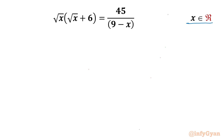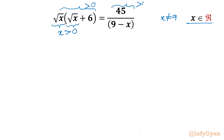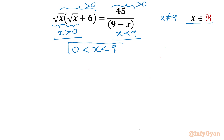Let's get started by writing the domain of the equation first. Since root x is involved, x should always be positive for real solutions. On the right hand side, the denominator cannot be 0, so x cannot be 9. The LHS is positive since we have a square root plus 6, so the RHS should also be positive, meaning x should be less than 9. Taking the intersection, x is greater than 0 and less than 9, so our answer lies in the interval (0, 9) excluding endpoints.